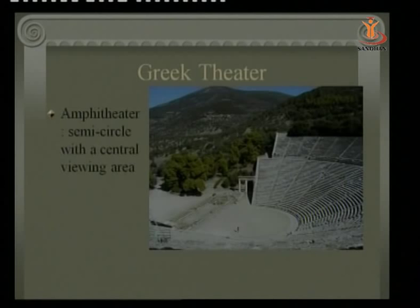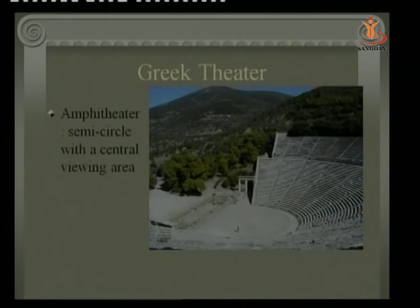Before explaining about Sophocles or Oedipus Rex, we should know what exactly is the Greek theater. It looks like an amphitheater — a semi-circle with a central viewing area. It's not a complete circle; that is where the audience used to sit, and down on the stage the drama was enacted.